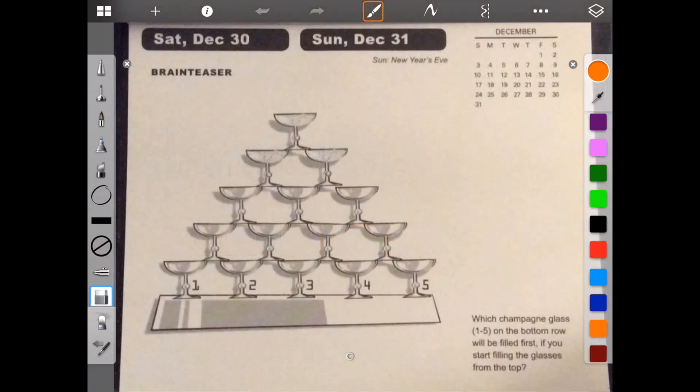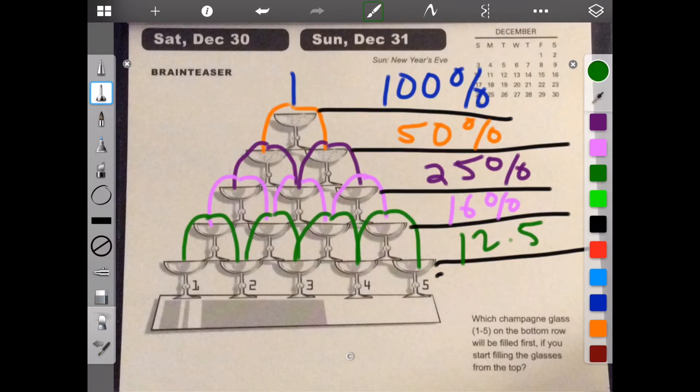Hello, welcome to the last brain week of Brain Games Calendar 2017. We're in week 52, day six. We have Brain Teaser, our last one. Which champagne glass one through five on the bottom row will be filled first if you start filling the glasses from the top?